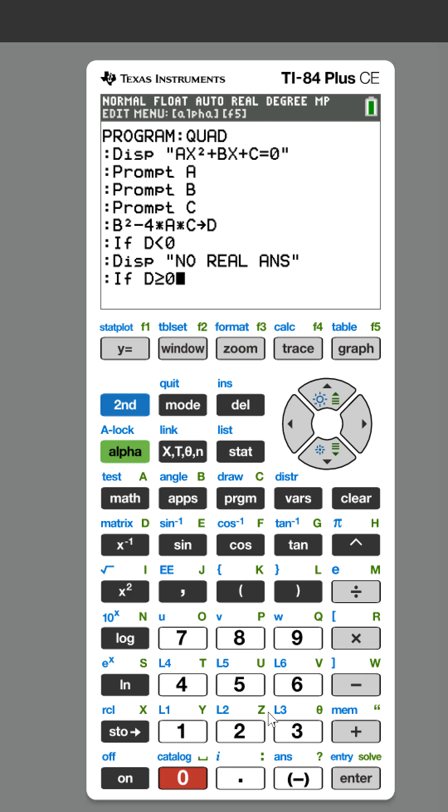So to do the formula, we get two answers. So you're going to do negative b plus the square root of the determinant, which we already found, b squared minus 4ac. So we're just going to call that d.